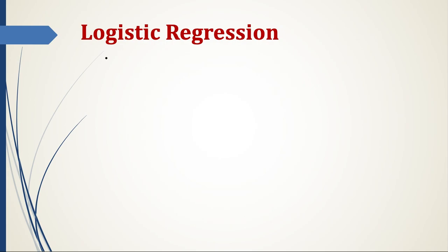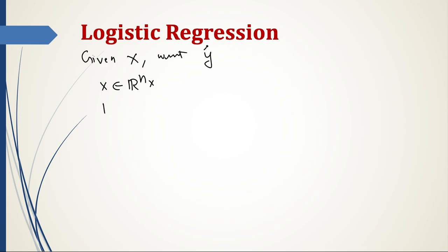If you remember from our earlier video, x, which is the input, was an n-dimensional vector. Given x, we want an estimate y-hat such that it denotes the probability of y being one given x. So we want to estimate what is the probability of y equaling one given an input, and that will be denoted by this estimated value of y.